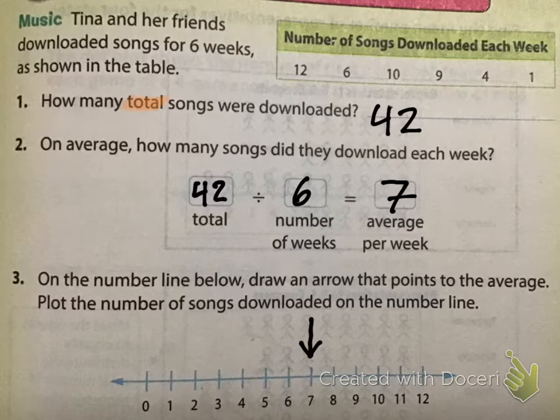So on the number line, draw an arrow that points to the average right there. And plot the number of songs downloaded on the number line. She downloaded twelve, ten, nine, six, four, and one. So those are the songs that she's downloaded. And if you look, that average is kind of towards, it's in the middle of them. It's not in the exact middle. And that is an important note. But as we can see, it's a good representation of all of them.